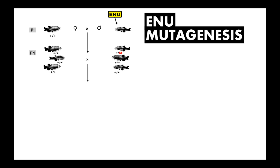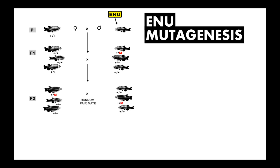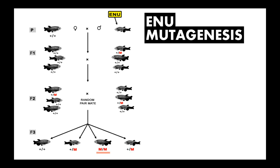Again, offspring is bred with wild-type fish to isolate defective sequences. Random brother-sister mating of this generation should recover different mutations visible in homozygous phenotypes.